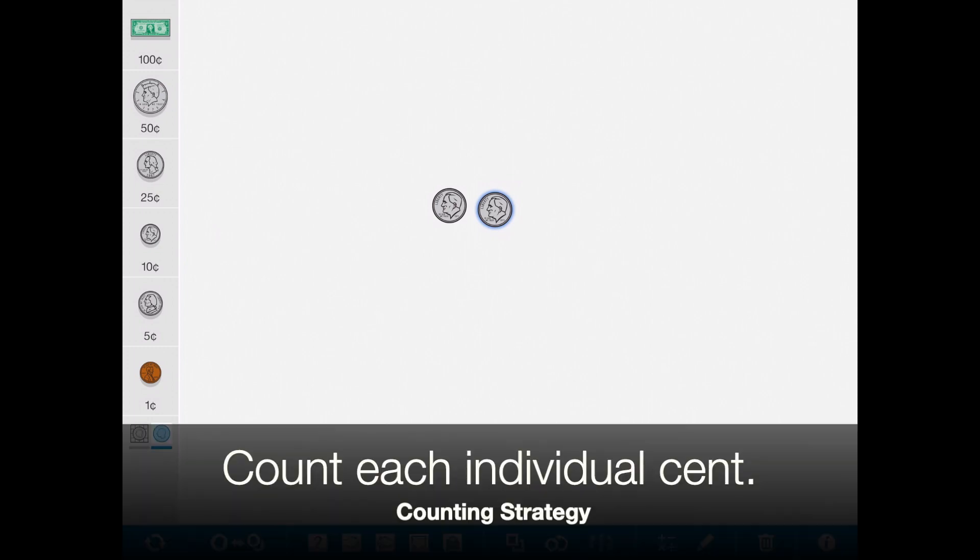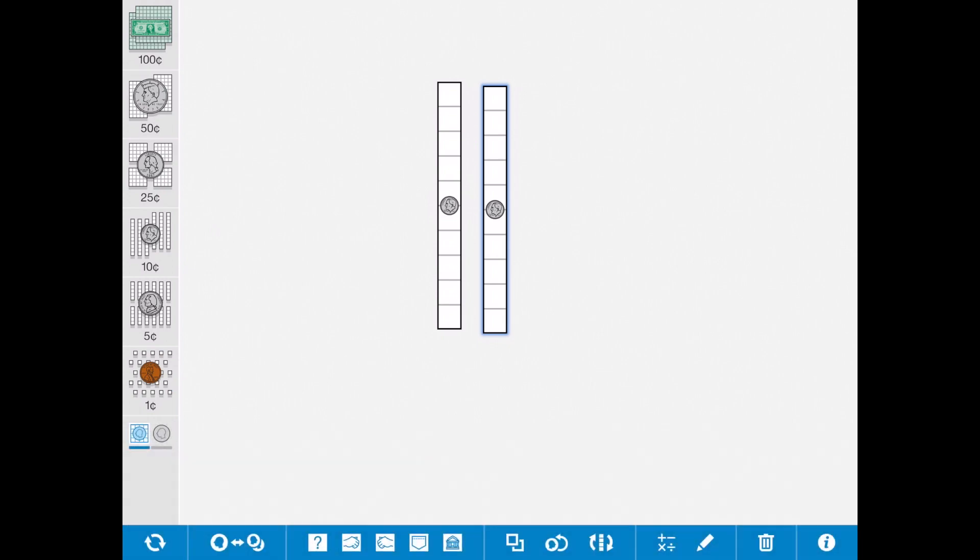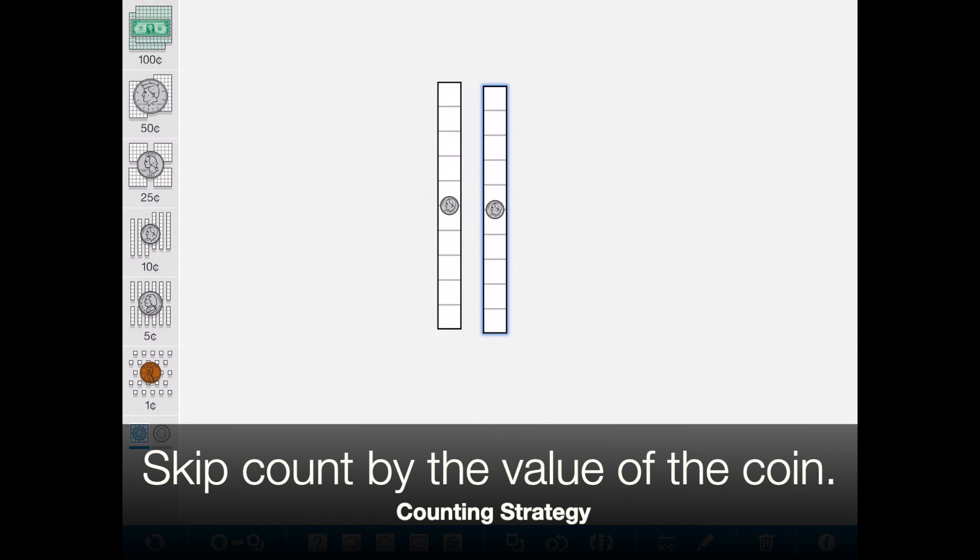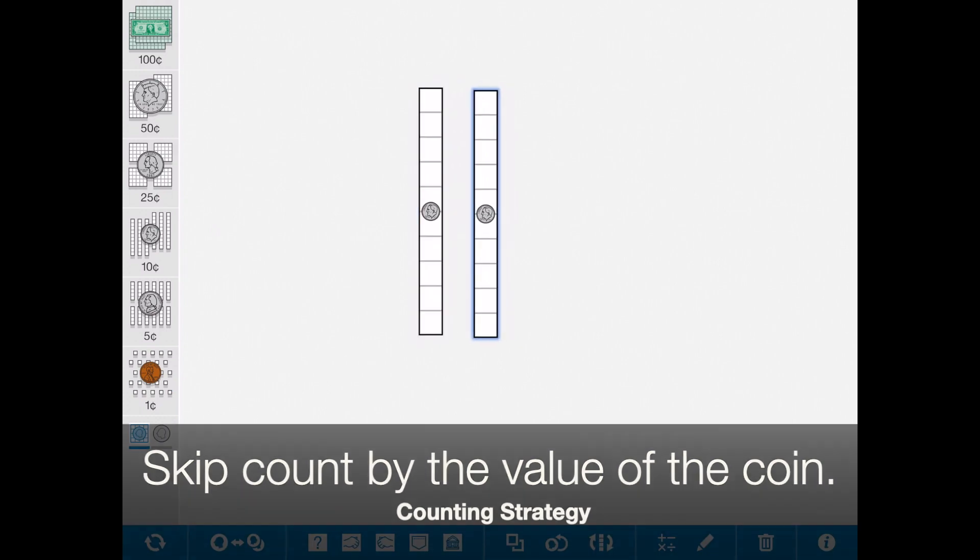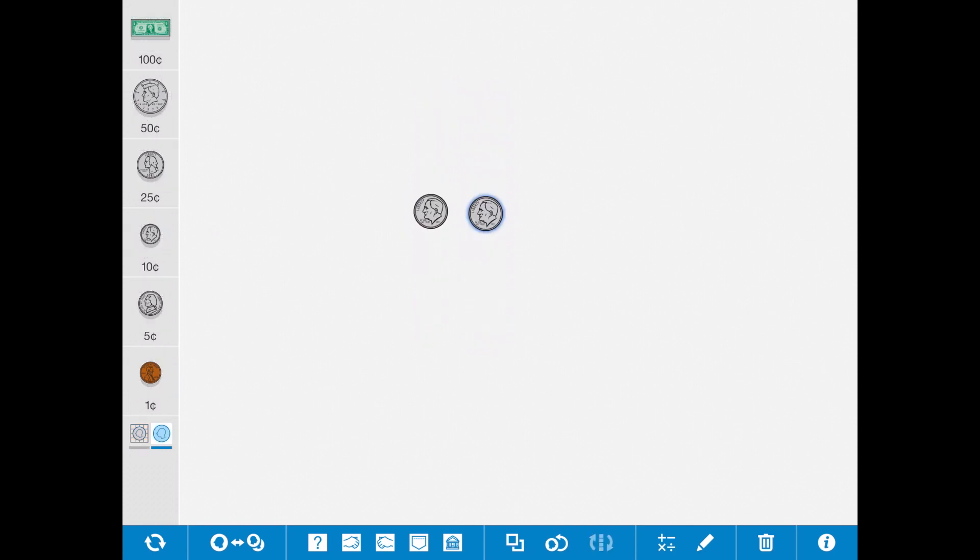Did you count by ones? If we switch this over, count each individual square, going 1, 2, 3, 4, 5, 6, 7, 8, 9, 10, 11, 12, 13, 14, 15, 16, 17, 18, 19, 20. Did you skip count by 10s and just say 10, 20? Did you add them and do 10 plus 10 to equal 20? Any of those work. There are some that are a little bit more efficient than others.